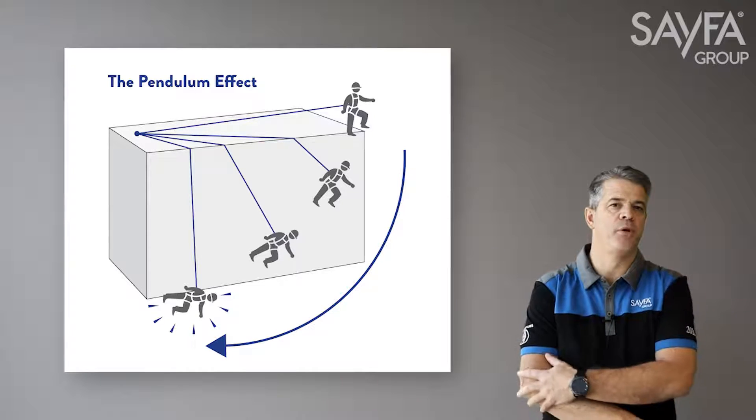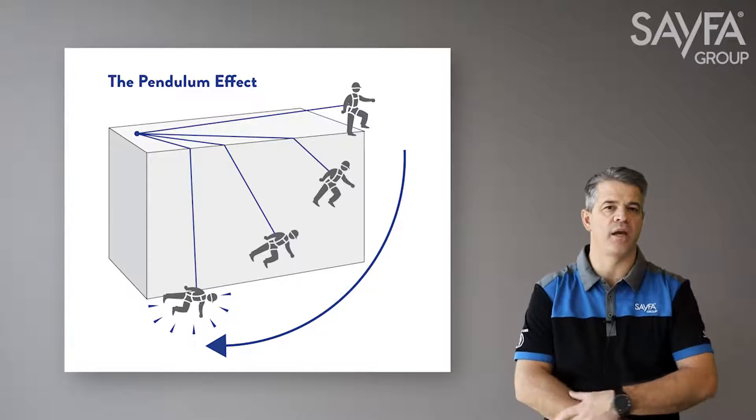This is caused when the anchor is positioned closer to one fall edge than the other in a corner situation, or the anchor spacing requires extension of the rope lanyard to reach the fall edge.